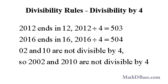Though the years 2002 and 2010 are even numbers, 02 and 10 are not divisible by 4. So 2002 and 2010 divided by 4 will not give a whole number result: 2002 divided by 4 equals 500.5, and 2010 divided by 4 equals 502.5.